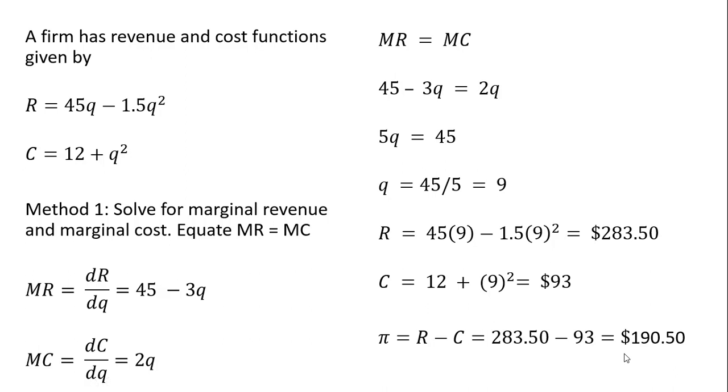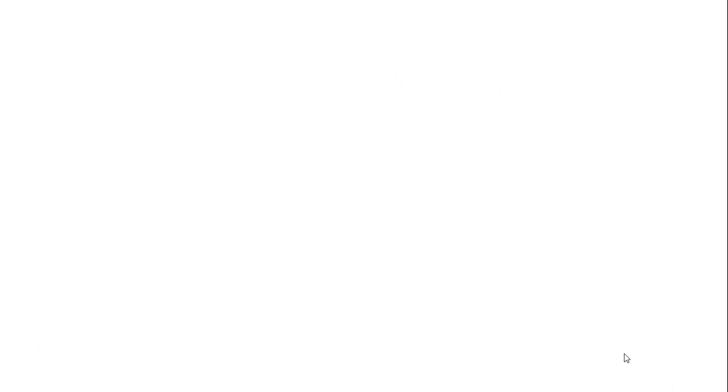Method 2 is we're going to create a profit function, and from that, we're going to solve for marginal profit, which we'll set equal to 0. So we're going to set up a profit function, revenue minus cost. So here's our revenue equation, and I'm subtracting out our cost equation. So I'm subtracting out the 12 for fixed cost, and I'm subtracting out minus q squared, which would represent our variable cost.